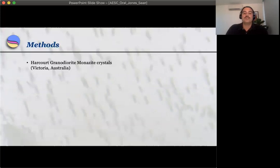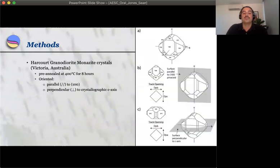The material used in this study are monazite crystals from the Hardcourt Granidiorite. The first thing we did was pre-anneal the grains to remove any pre-existing radiation damage. And then we made a bunch of mounts with grains oriented parallel to the 100 face and also perpendicular to the crystallographic C axis.